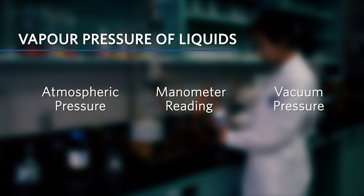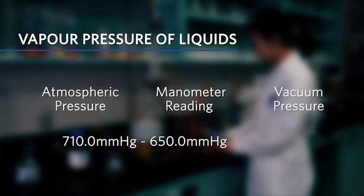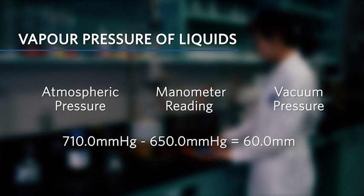If the atmospheric pressure is 710.0 mmHg and the manometer reads 650.0 mmHg, then the pressure in the system is 60.0 mmHg.